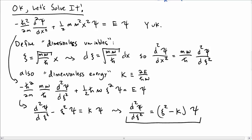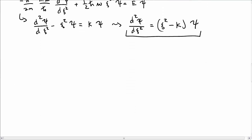In our last video we manipulated the Schrödinger equation for the quantum harmonic oscillator into this form, so now let's go about solving it.